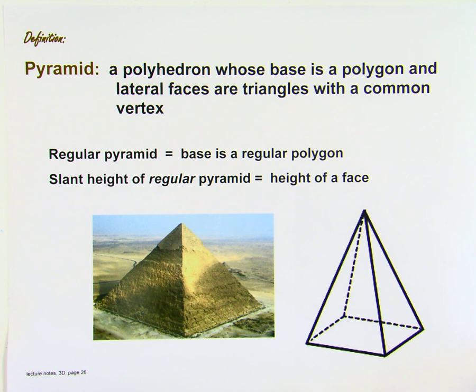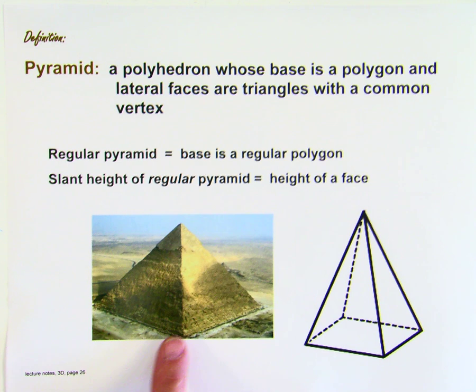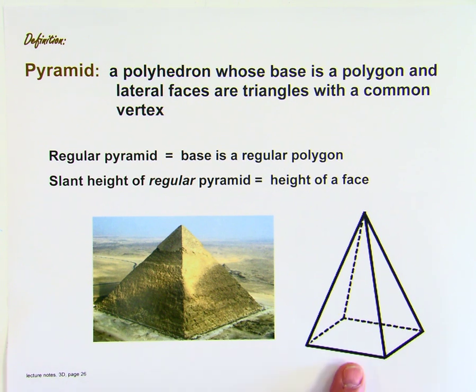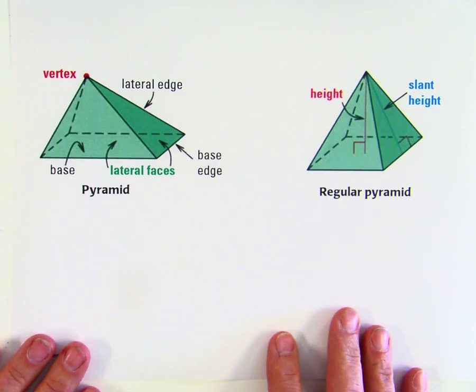The slant height of a regular pyramid only is the height of a face. Here's the Great Pyramid of Giza, which I think is a square pyramid.